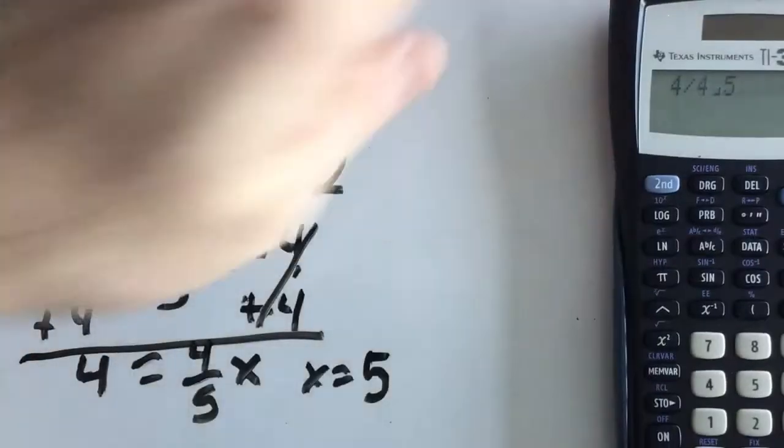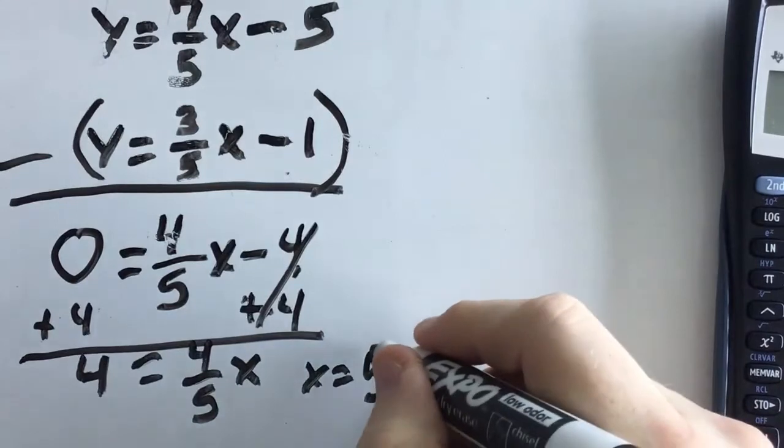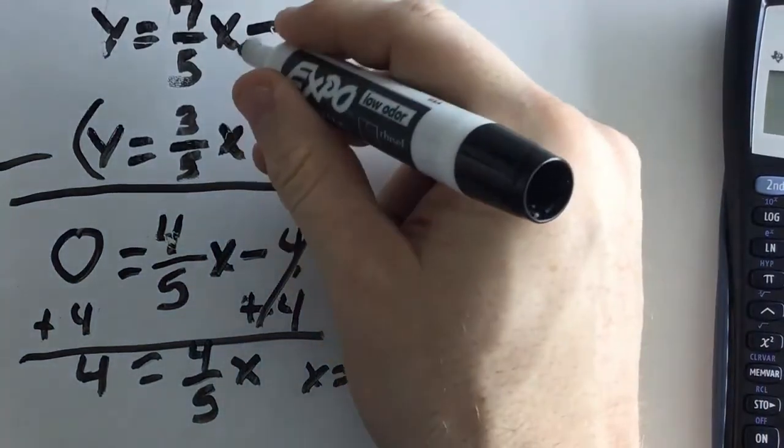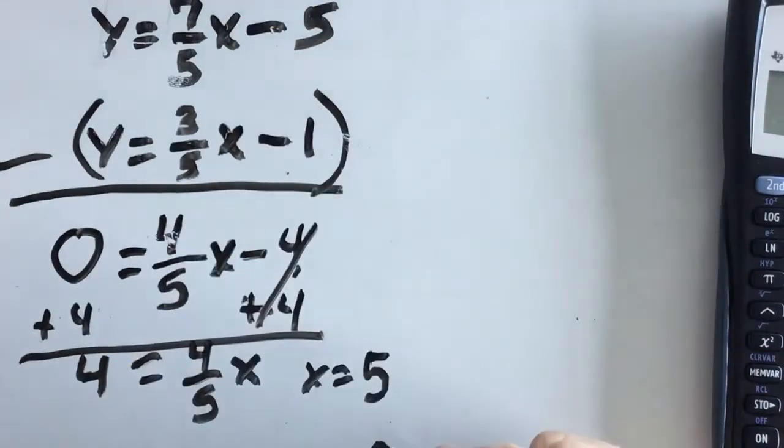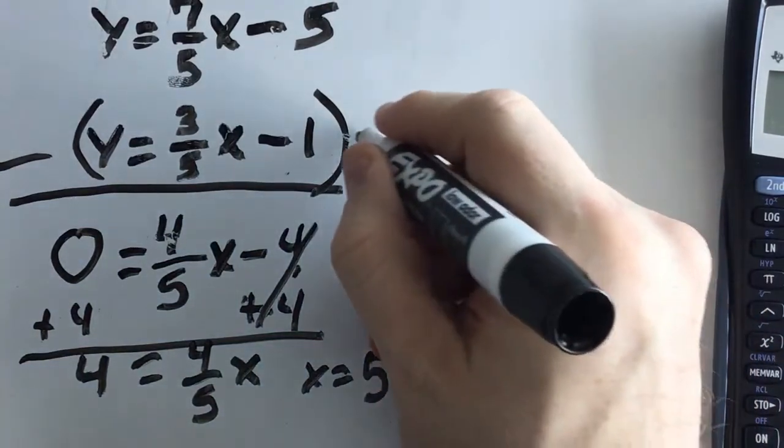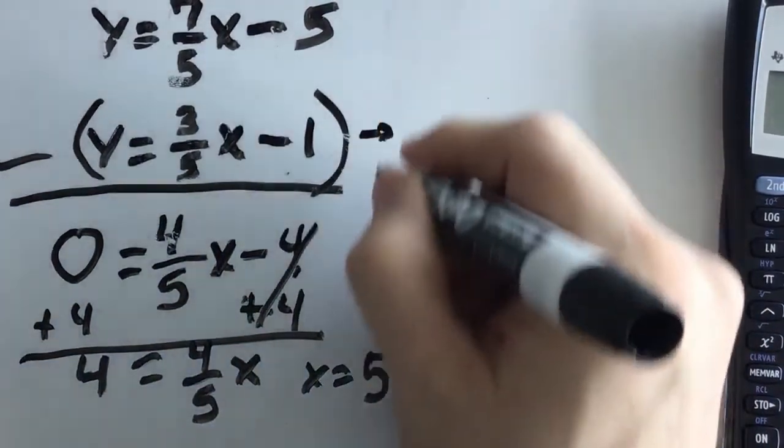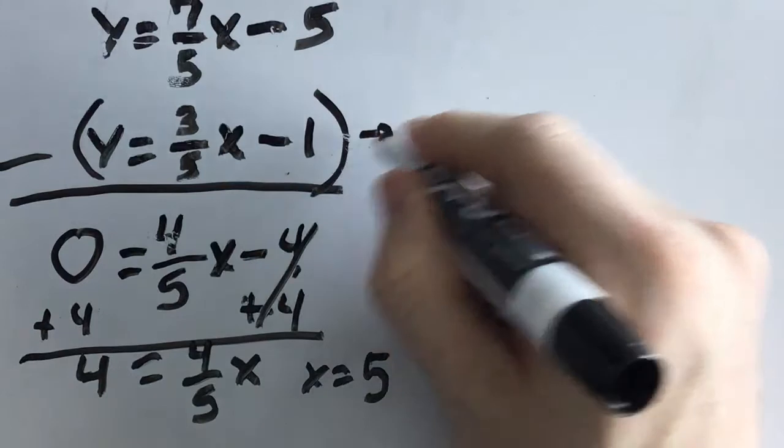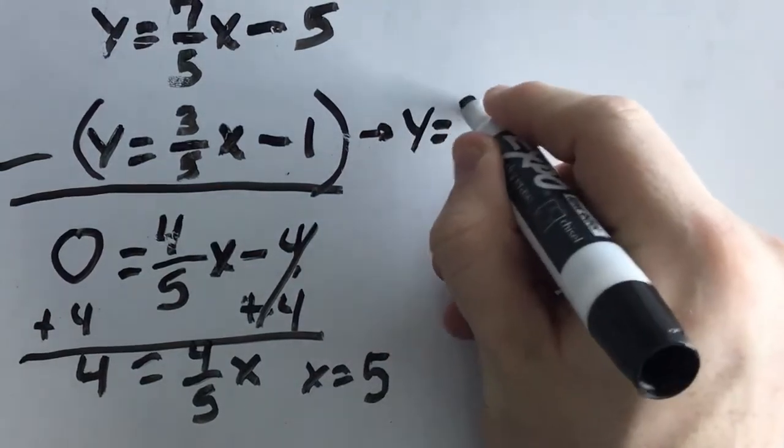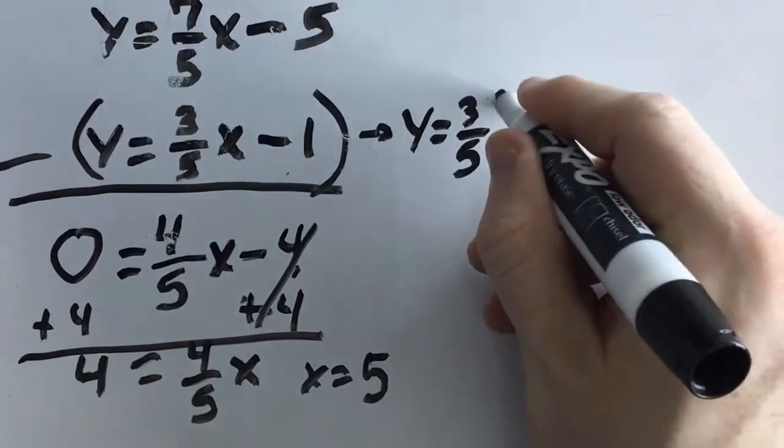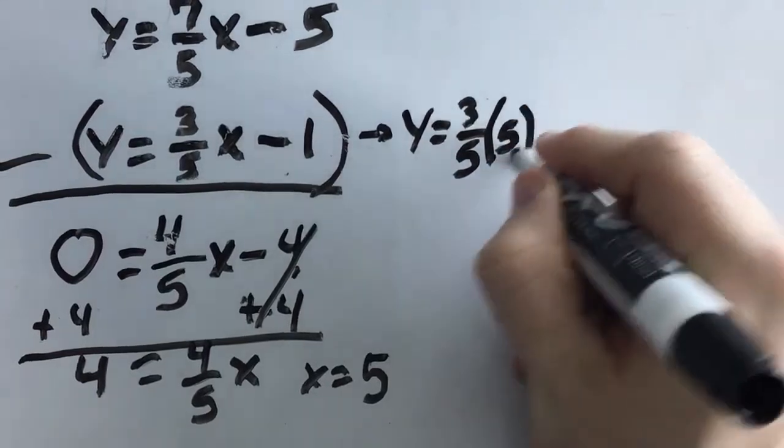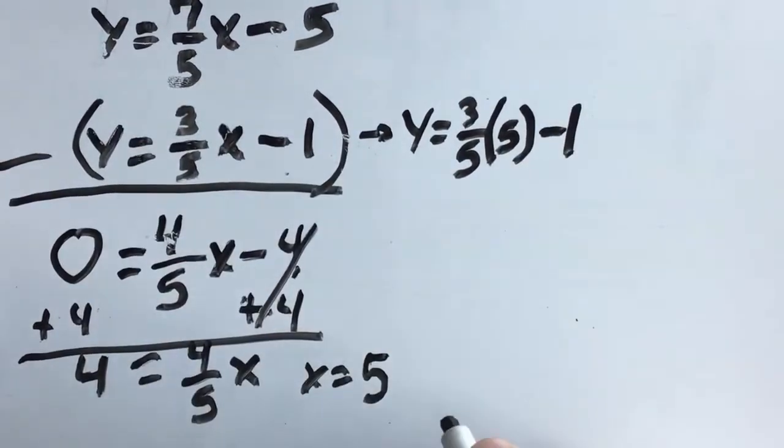And now that we know what X is, if I take my five answer and put it in either equation, I'll get my solution. So, let's say I pick this one. It doesn't matter which one you pick. So, let's say we have the first one here. Y will equal three-fifths times five minus one.